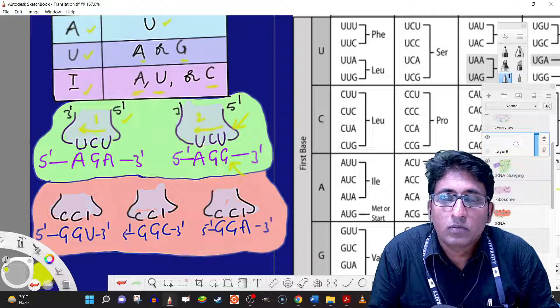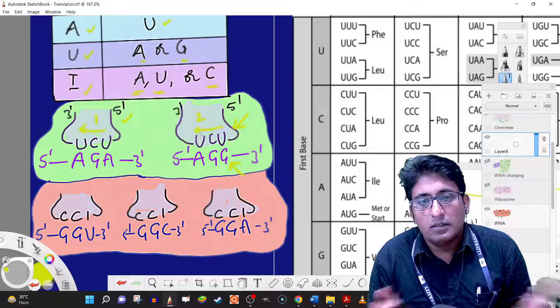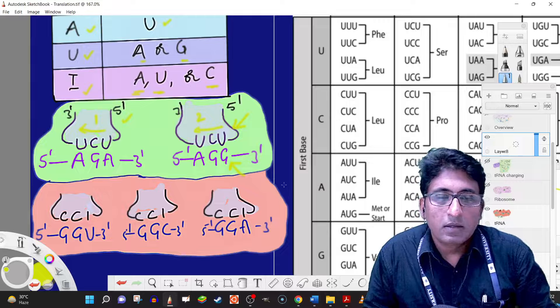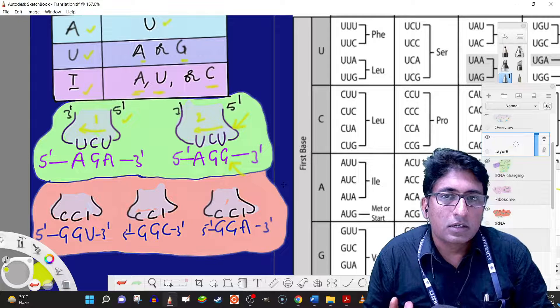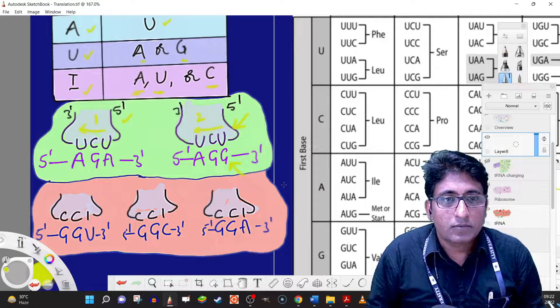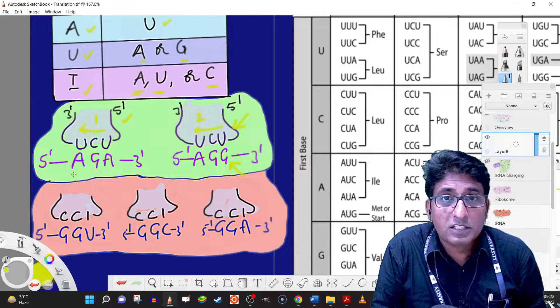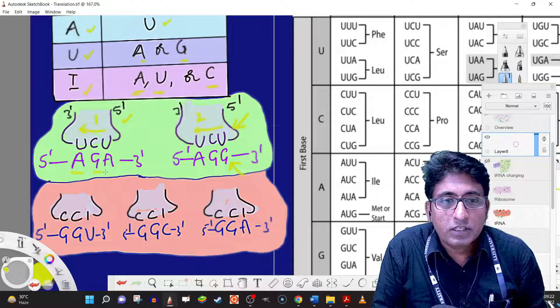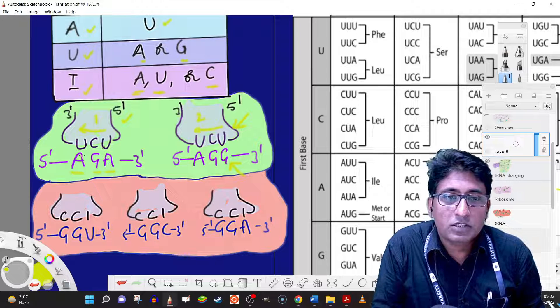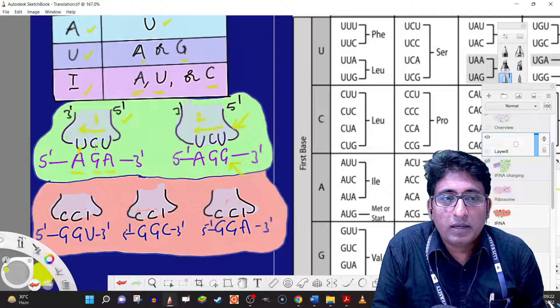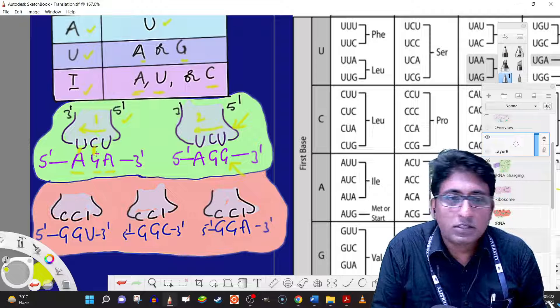The tRNA is the same, but the difference is in the codons they recognize. The codon being base paired with is AGA—that is a perfect match. U base pairs with A, C with G, and U with A.